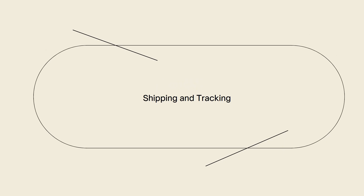Shipping and tracking: CJ dropshipping will handle the packaging and shipping of the order to the customer's address. They will provide you with a tracking number, which you can then add to the order details within Shopify. This allows your customer to track their package's progress.